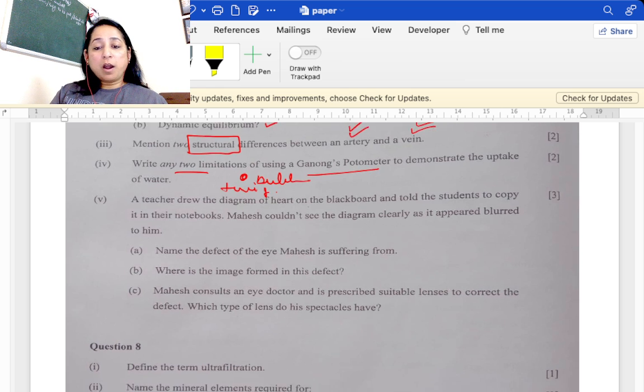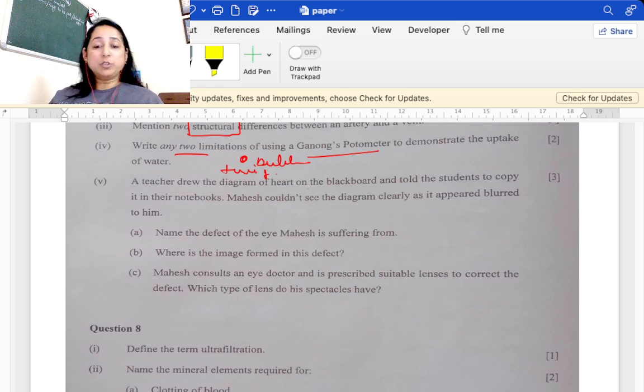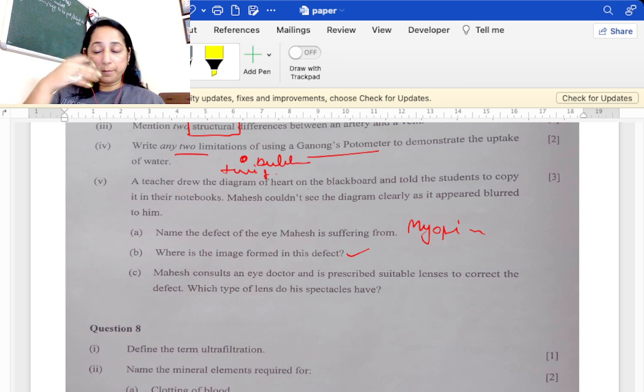Teacher drew a diagram of heart and Mahesh could not see it properly. That means he is suffering from myopia. Where is the image formed in this defect? In front of retina. What is it corrected with? It is corrected with a concave lens.